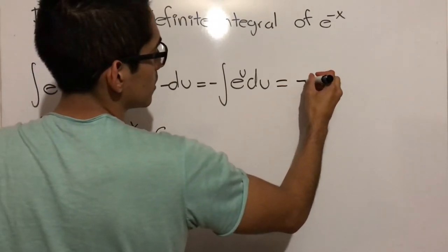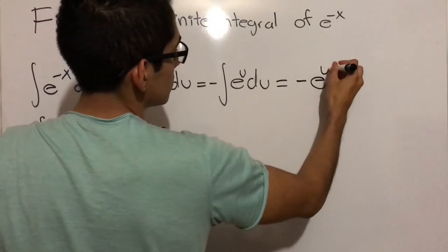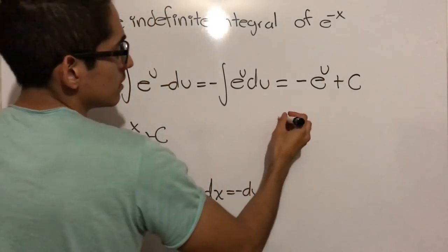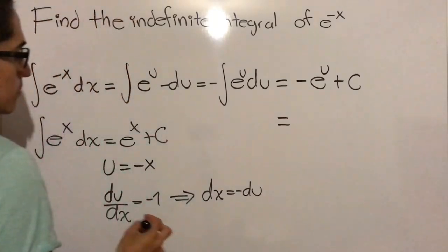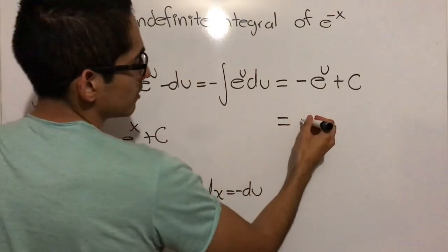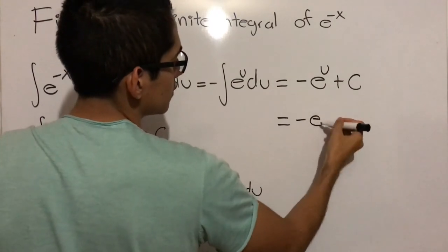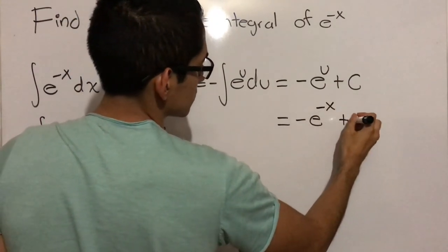This will be equal to minus e to the u plus an arbitrary constant. Now recall that u equals minus x. So finally we get that the indefinite integral of e to the minus x is minus e to the minus x plus c.